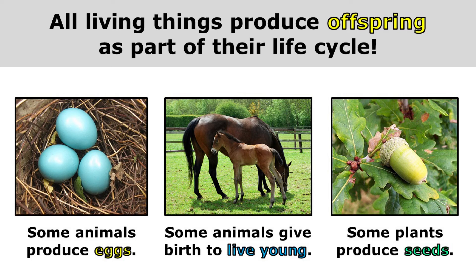It's important to understand that all living things produce offspring as part of their life cycle. Some animals produce eggs, like birds, frogs, or insects. Some animals give birth to live young, like a horse or a human having a baby. And some plants produce seeds. But all organisms produce some form of offspring.